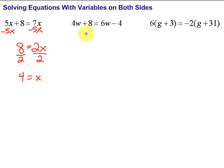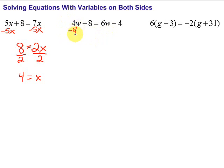Let's take a look at another example. We have 4w plus 8 equals 6w minus 4. We could get rid of the 4w or the 6w — it doesn't matter. But I would like to get rid of the smaller term and try to make sure my variable doesn't become negative. For example, if I subtract 6w from 4w, I end up with negative 2w. I prefer to keep variables positive if possible. So I'm going to subtract 4w from both sides. The 4w's cancel out, giving us 8 equals 2w minus 4.